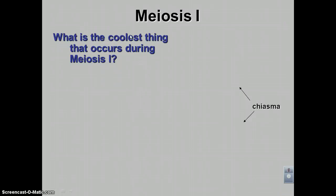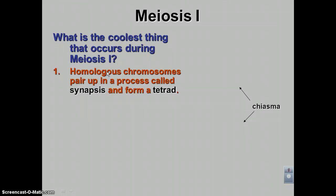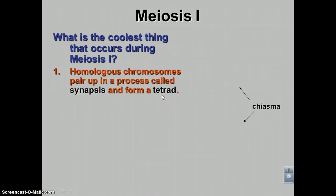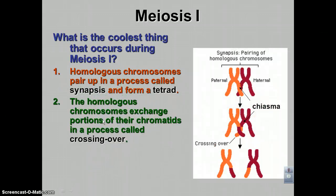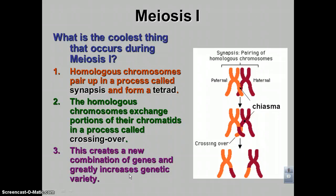Crossing over is actually the coolest thing that occurs during meiosis number one. It starts when homologous chromosomes pair up in a process called synapsis — remember, '-sis' means process. They form a tetrad, and the root word 'tetra' means four. Once the homologous chromosomes are paired up as a tetrad, they exchange portions of their chromatids — and this is the actual crossing over, which creates greatly increased genetic variety.